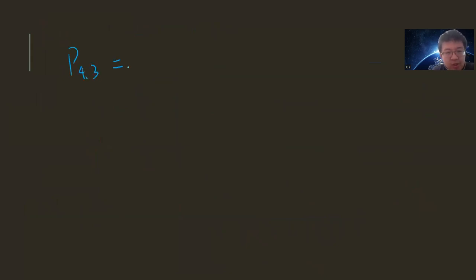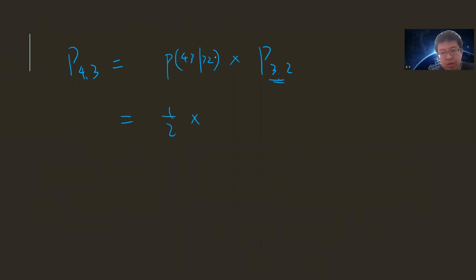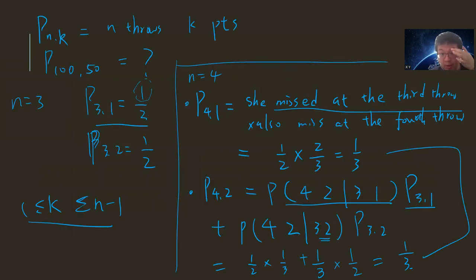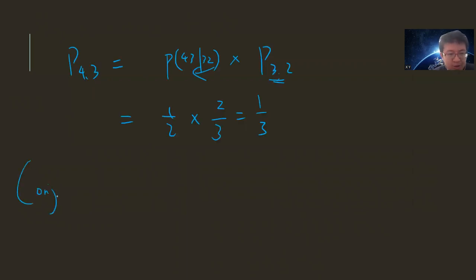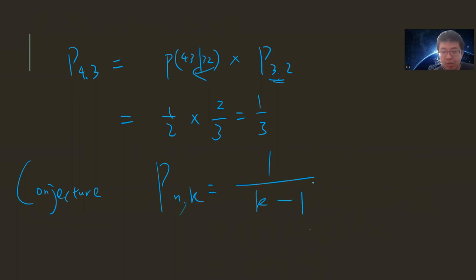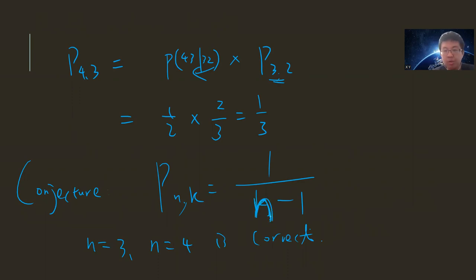Okay, so now you can see that they are all the same — one third, one third, one third. So now you can do mathematical induction. The conjecture is that p(n, k) equals one divided by n minus one. We already showed that n equals three and n equals four are correct. So our goal is to prove this is correct. Proof by mathematical induction: we assume this is correct for n and want to show it for n plus one.